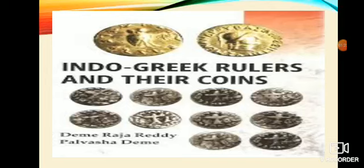They were known as Indo-Greek rulers or Greek rulers. These tribes invaded India from the northwest through the Khyber and Bolan Passes. They occupied parts of Punjab, Sindh, Rajasthan, and present-day Afghanistan and Pakistan. Most of the kings who established their kingdoms in these parts were adherents of Buddhism and played a vital role in the expansion and propagation of Buddhism.